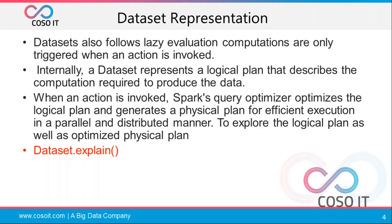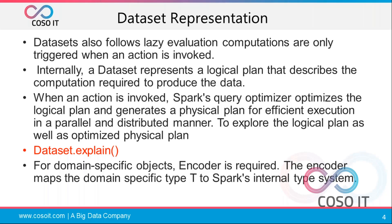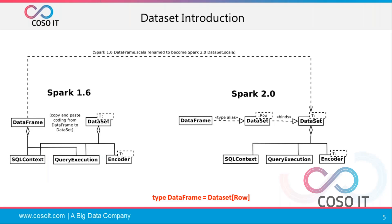For domain-specific objects, an encoder is required. An encoder maps your domain-specific information to Spark's internal type system — whether it's an integer type, string type, array, or a different collection. This is the key difference between DataFrame and Dataset: Dataset has a different encoder. The required optimization and execution are similar, but the DataFrame type equals Dataset of row.